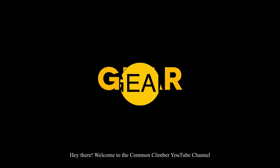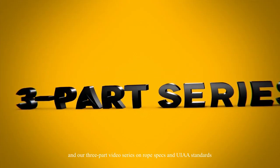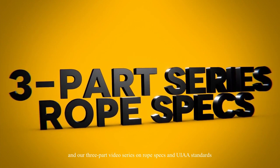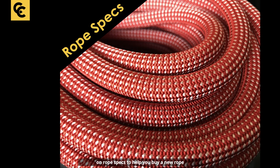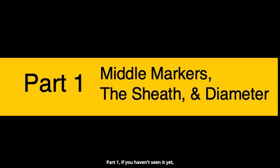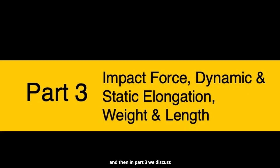Welcome to the Common Climber YouTube channel and our three-part video series on rope specs and UIAA standards. This is part two of a three-part series on rope specs to help you buy a new rope. Part one talks about middle markers, the rope sheath, and the diameter. In this section we're talking about falls and factor two falls, and in part three we discuss impact force, dynamic and static elongation.